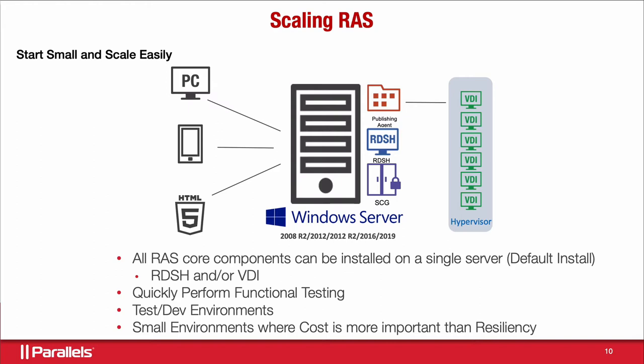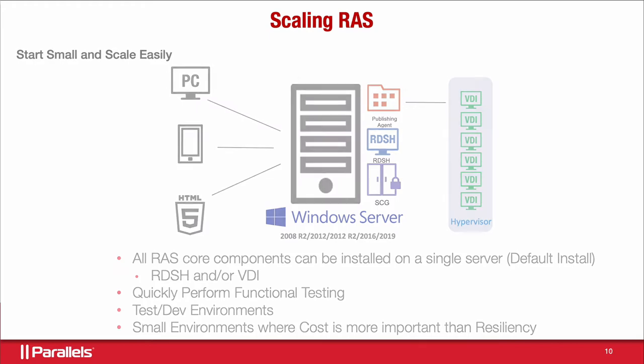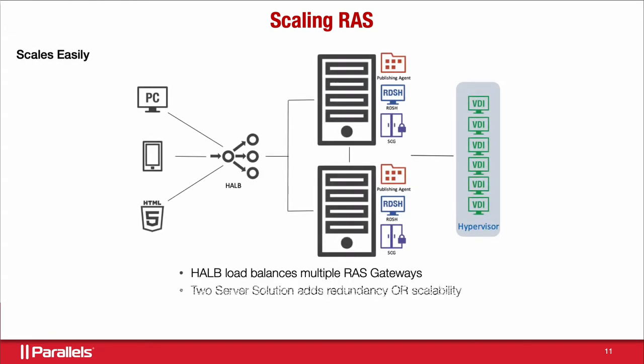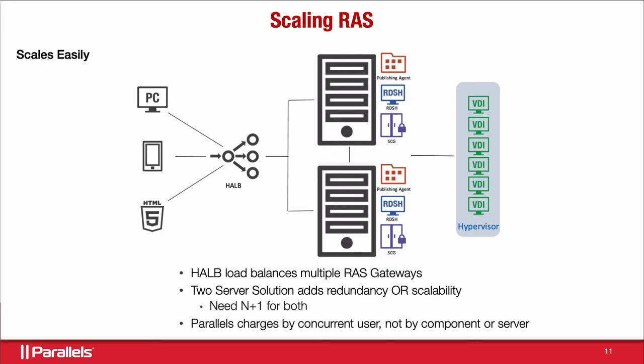You can scale out without being locked into a single server. The next step would be to add a second all-in-one server, then introduce the High Availability Load Balancer (HALB) for load balancing. The HALB load balances just the gateway component. You now have a two-server solution with redundancy or scalability added. This costs exactly the same from a Parallels perspective as the single-server setup.